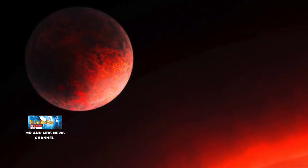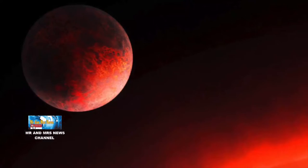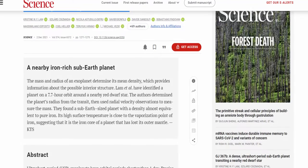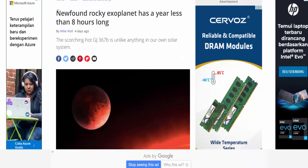Menurut mereka, exoplanet bernama GJ367b yang mengorbit bintang sejauh 31 tahun cahaya dari matahari kita ini memiliki durasi setahun yang hanya berlangsung sekitar 8 jam saja.